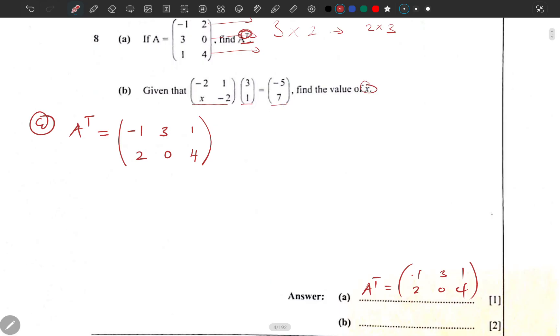Given that this matrix is multiplying this matrix and equals this one, how do we find x? When multiplying matrices, it's row by column. This row must multiply all elements in that column, and as long as you're dealing with the same column, you add those products. So: (-2)(3) + (1)(1), and (x)(3) + (-2)(1). This equals (-5, 7).